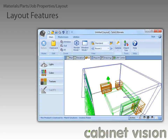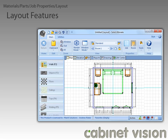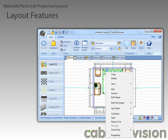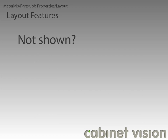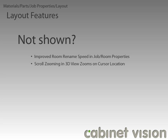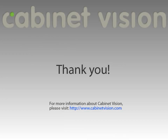Back in the plan view, a quick note: the favorites section has had its maximum item number expanded to 32. The next feature involves right clicking on cabinets in the plan view — when you select the section menu option, you will be brought to the elevation view and into the section editor. Additionally, work was done to make it faster to rename rooms in the job and room properties, and when zooming in the 3D view, the camera will zoom in on the location of the mouse.